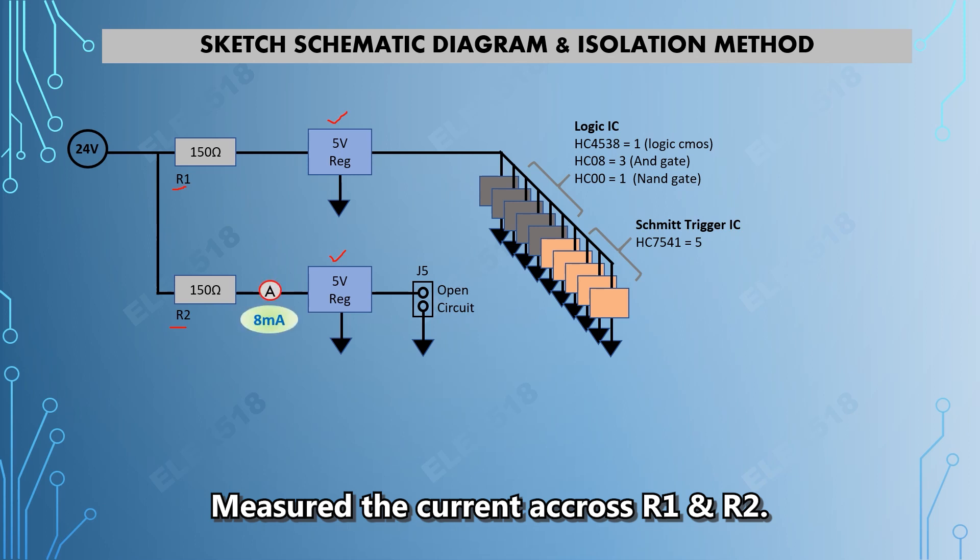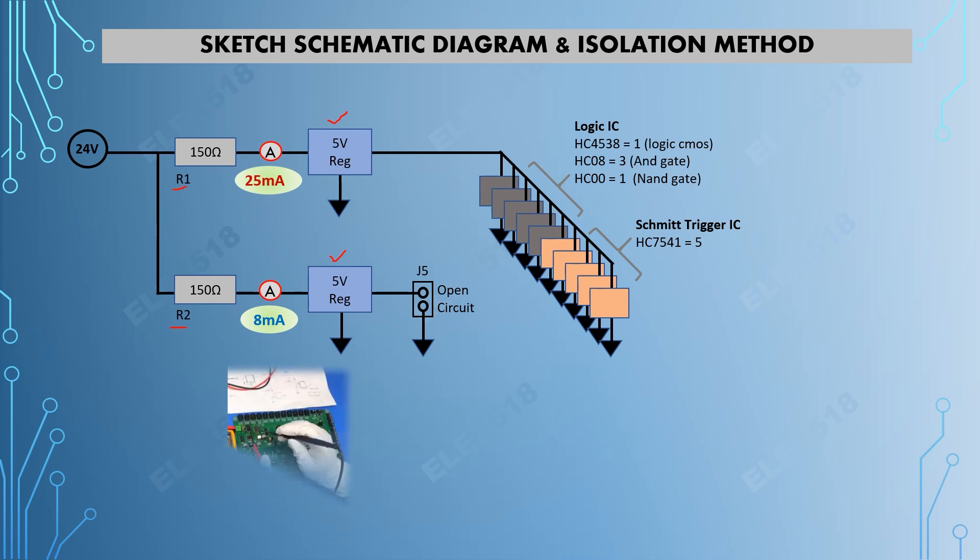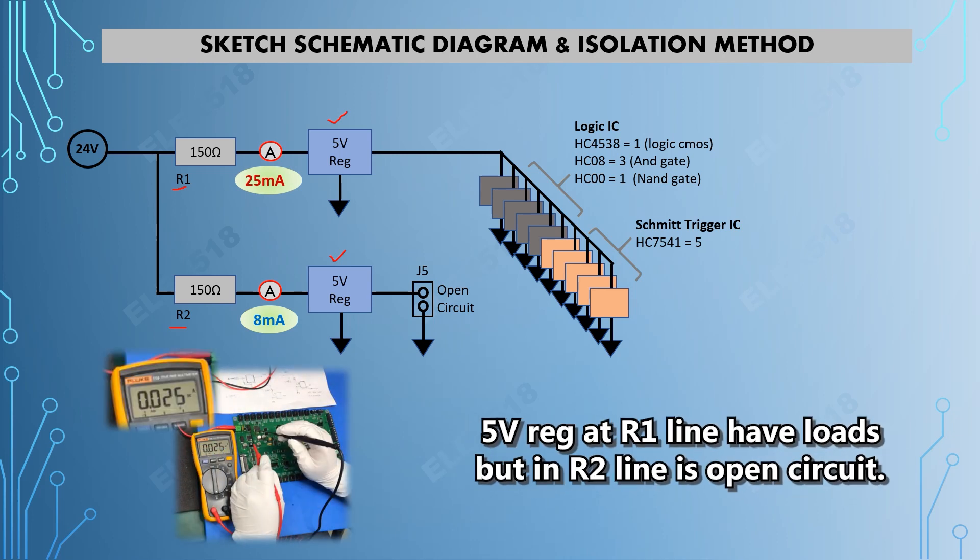It is very obvious that R1 is having the higher reading, probably because of the load on the output of the regulator, which has a logic IC and Schmitt trigger IC.